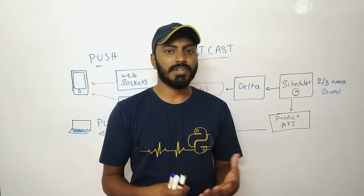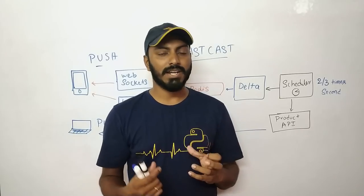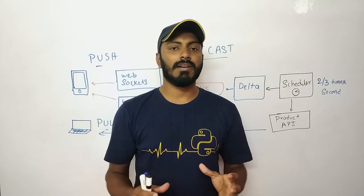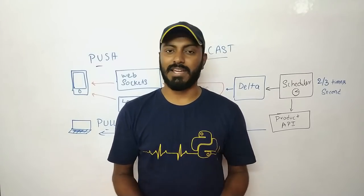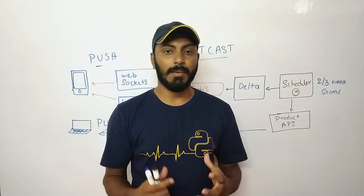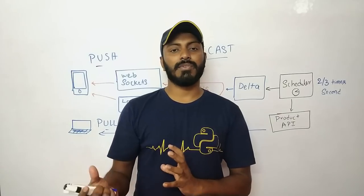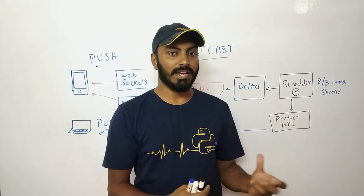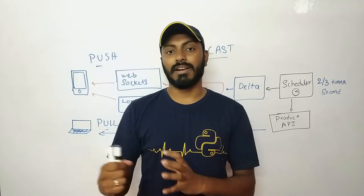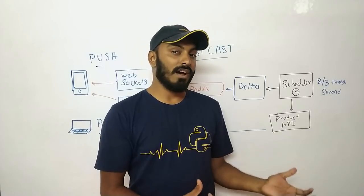So far we've covered the pull model — make an API call, get information. But with more users on mobile applications, a push-based mechanism is also needed, where the server pushes data to clients whenever it has new data, like score changes during a match, without the client even asking.